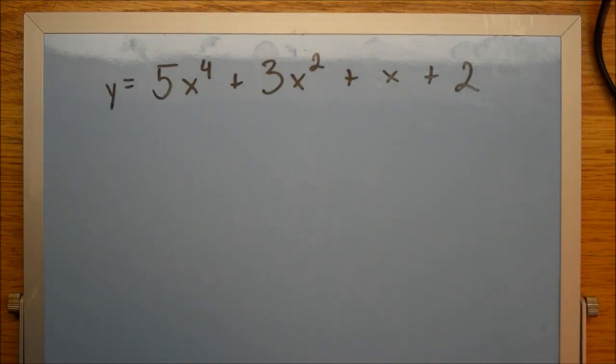So we're going to start out with a simple equation here. We have 5x to the 4th plus 3x squared plus x plus 2, and we're going to take the derivative of that.